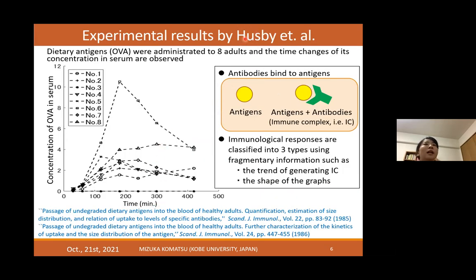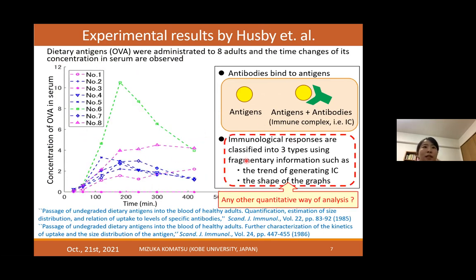In this paper, we used experimental results conducted by Husby, an immunologist. In his experiment, dietary antigens called OVA were administered to eight subjects, and the time changes of the dietary antigens were observed. Because there are eight subjects, we have eight graphs. Based on this experimental data and immunological knowledge, the graphs were classified into three types—for example, the pink graph corresponds to atopic constitutions, and the blue one corresponds to normal people.